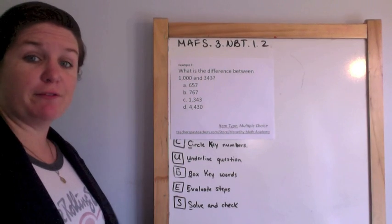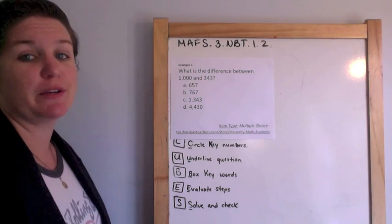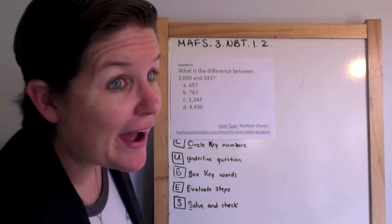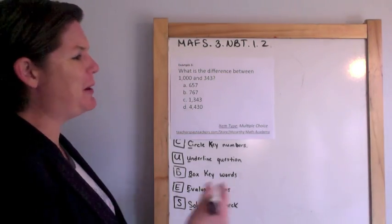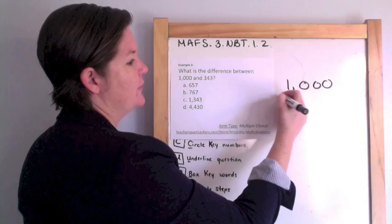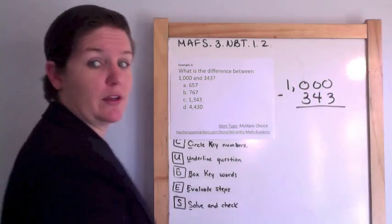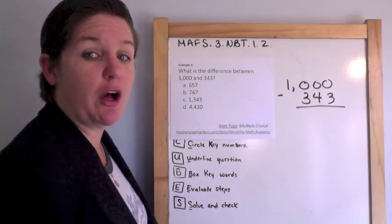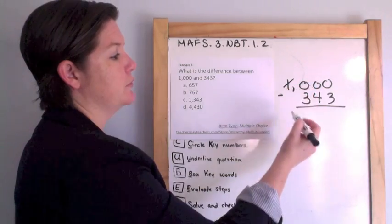Example 3. What is the difference? There's that word again. The difference between 1,000 and 343. Difference means what? You're right. Subtraction. Good job, you're so smart. So we have 1,000 minus, make sure you line them up in the correct place values, 343. Now I've got zeros all the way across, so here's the trick for the zeros. Go all the way over. Regroup.